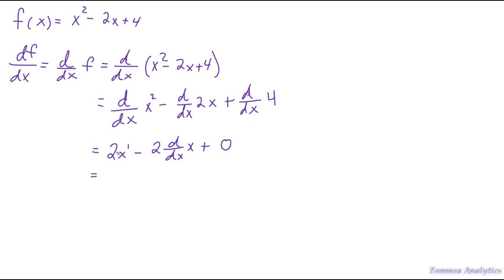We keep the 2x as it is because we've already taken the derivative of that. The derivative of x is going to be 1 — if you just have the variable by itself to the 1st power, because really there's a 1 as the exponent, it's just usually implied. So it's going to be 2 times the derivative of x, which is 2 times 1, which is just 2. And then plus 0. That all equals, in the end, 2x - 2.